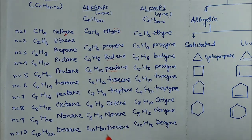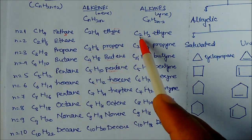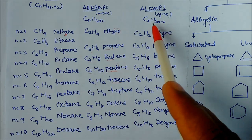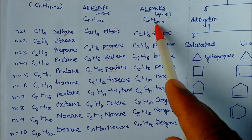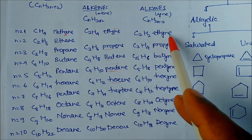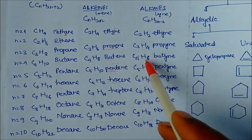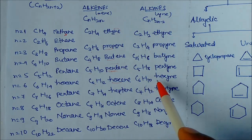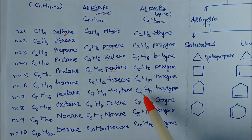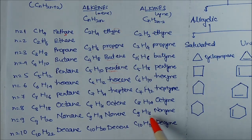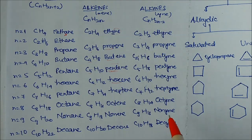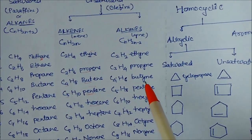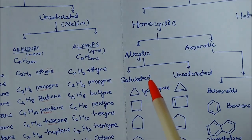For alkyne, using the general formula CnH2n-2 with n=2: 2×2=4, minus 2 gives C2H2. This is ethyne. Similarly, C3H4 is propyne, C4H6 is butyne, C5H8 is pentyne, C6H10 is hexyne, C7H12 is heptyne, C8H14 is octyne, C9H16 is nonyne, and C10H18 is decyne. This completes the open chain aliphatic or acyclic carbons.